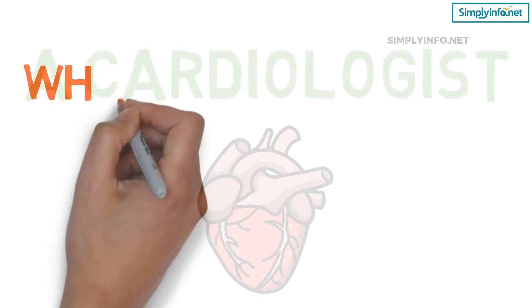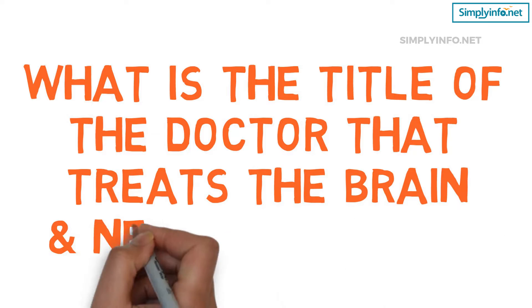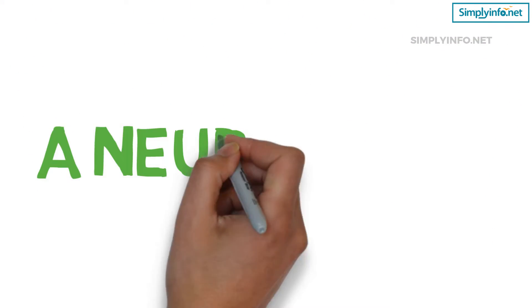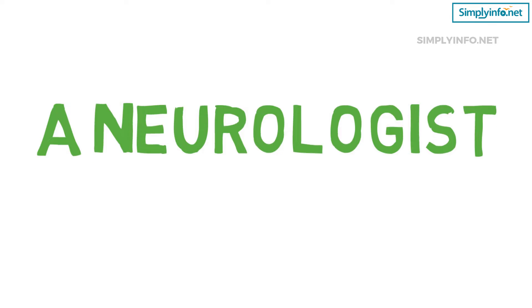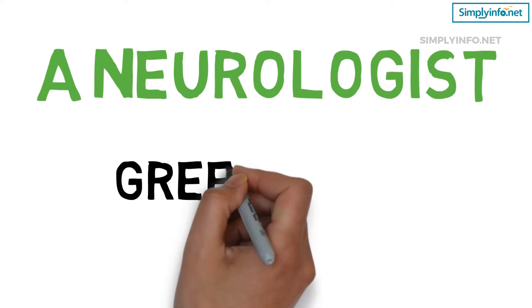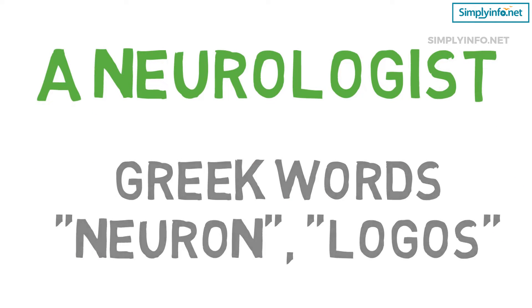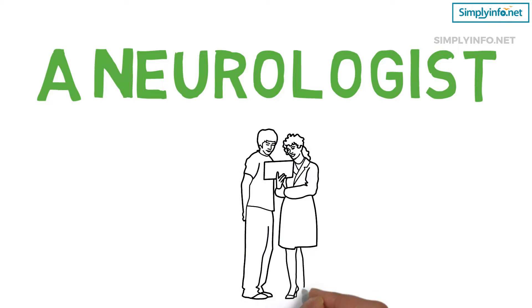What is the title of the doctor that treats the brain and nervous system? A neurologist. Neurologist is derived from the Greek word 'neuron', which means nerve, and 'logos', which means science.